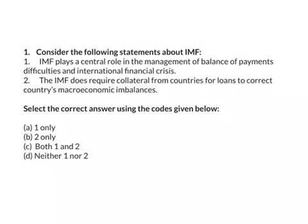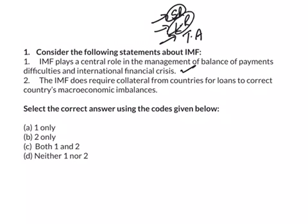The first question is, consider the following statements about International Monetary Fund. IMF plays a central role in the management of balance of payments difficulties and international financial crisis. We know that IMF plays three roles: one is surveillance role, the other one is lending role, and the other one is technical assistance role. Under the surveillance role, it will track the global economy as well as the economies of the member countries.